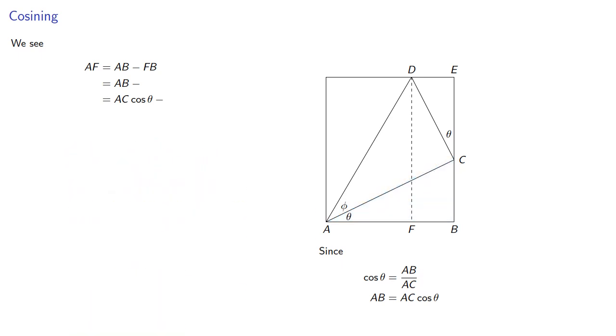To find FB, we note that it's the same as DE, which is in this right triangle. So sine of theta is DE over CD, and so DE is CD sine theta.